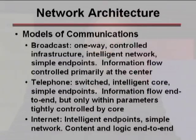So let's start with models of communication or the architecture of a network. There are three ideal type models that typify the 20th century and the internet at its end. The first is a broadcast model. It's typified by one-way communications, a controlled infrastructure controlled by its owner—an intelligent network, where most of what happens is controlled within the network at its core and with very simple endpoints. The information flow in a broadcast network is controlled primarily at its core by the broadcaster, by the network, with only relatively minimal power at the hands of the end user—which is to say turning the machine on or off and flipping channels.